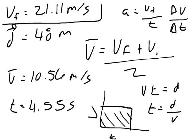And since final velocity right here is 21.11, I can divide that by my 4.55. And I know that my acceleration is 4.64 meters per second squared. So that answers the first part of the question, is the average acceleration is 4.64 meters per second squared.